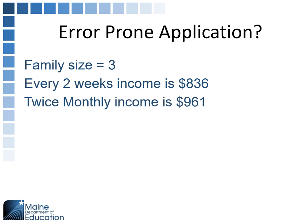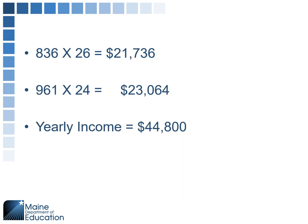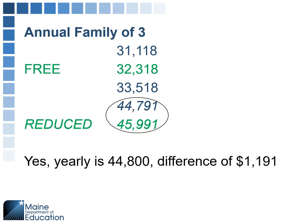Here's an example with two income sources requiring conversion to annual income. Family of three: income paid every two weeks is multiplied by 26, income paid twice a month is multiplied by 24. Adding those two figures gives a yearly income of $44,800. That's a reduced application, and it is less than $1,200 below the reduced income guideline for a family of three, so it is error prone.